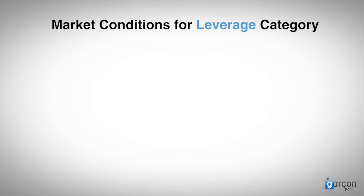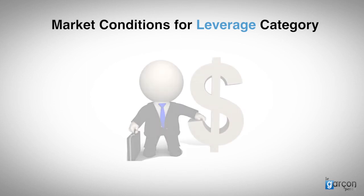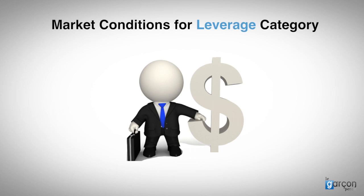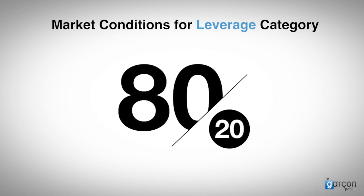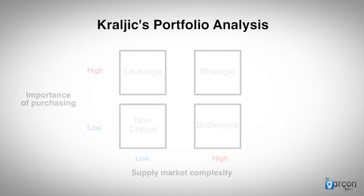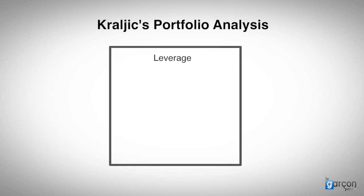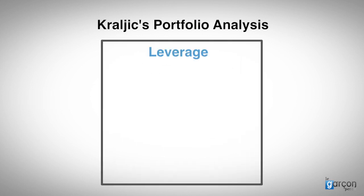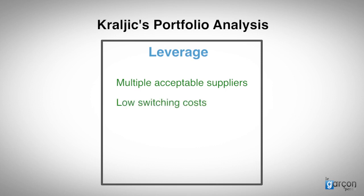So let's look at the market conditions for a category to be classified as leverage. Firstly, the category should have significance to the buyer, perhaps due to the value of spend. Do you remember the Pareto Principle? The leverage quadrant and the strategic quadrant normally represent more than 80% of the total spend. So these are higher value categories, and the market in the leverage quadrant is usually relatively simple, which means multiple acceptable suppliers, perhaps more than three or four, and relatively low switching costs.